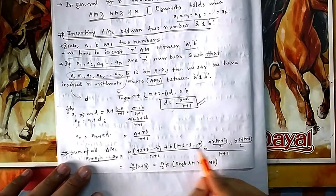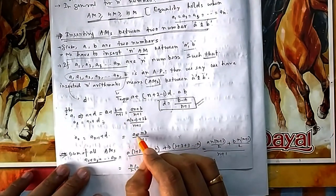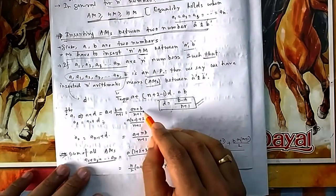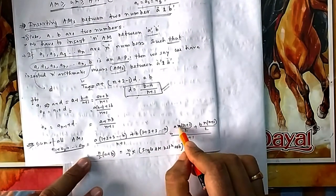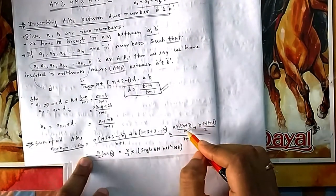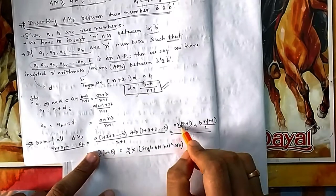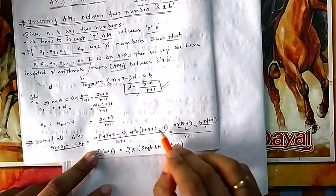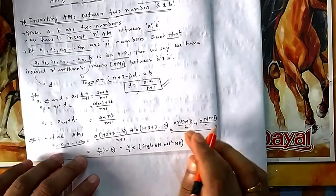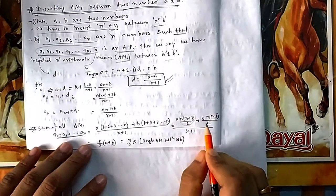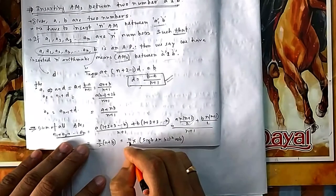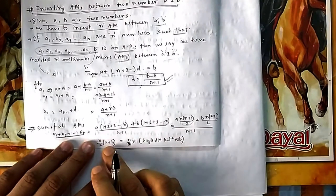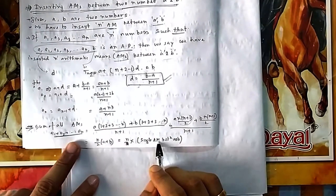If you add all the AMs, taking a common gives 1 + 2 + 3 + ... + n, and taking b common gives the same. The sum 1 + 2 + ... + n equals n(n+1)/2, using the summation of natural numbers formula or AP summation. Simplifying, the total sum becomes (n/2)(a + b).